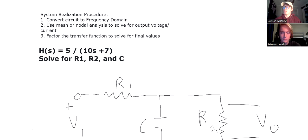The first thing you're going to do is convert the circuit to frequency domain. Second, you're going to use nodal or mesh or any other technique to solve for your output voltage or current, depending on what you're solving for. And then lastly, you're going to factor the transfer function to make it neat, so you can solve for those final values by inspection. And all that's going to make more sense when Jonah goes through this problem that he created.